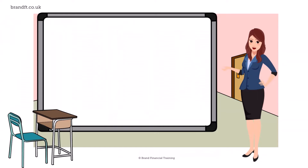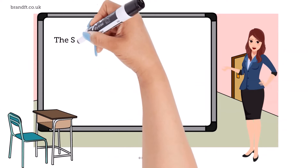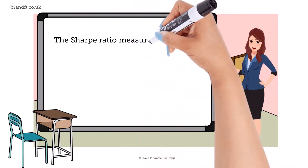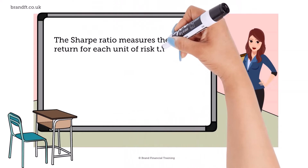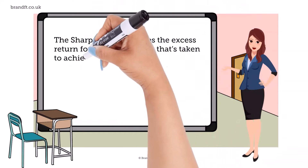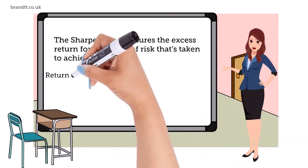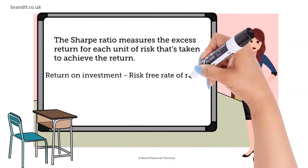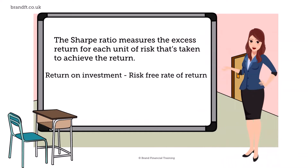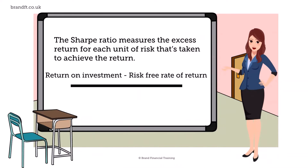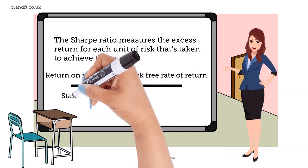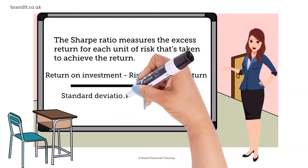One way to measure risk-adjusted returns is to use the Sharpe Ratio. The Sharpe Ratio measures the excess return for each unit of risk that's taken to achieve the return. The formula is the return on the investment or portfolio minus the risk-free rate of return, divided by the standard deviation of the investment or portfolio.